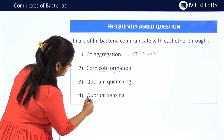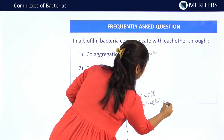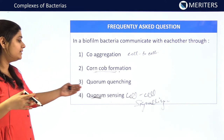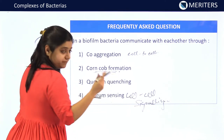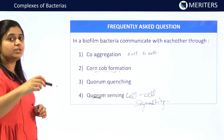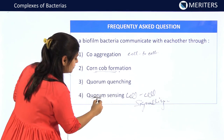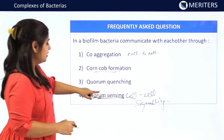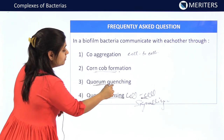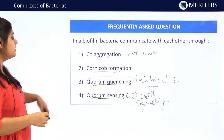Option 4 is quorum sensing, which is a cell-to-cell signaling pathway. As we have already seen, if any dangerous molecules or antibiotics attack the biofilm, one bacteria senses the danger, releases certain molecules, and these signals alert other cells — leading to processes like efflux pump activation and development of antibiotic-resistant bacteria. This process is known as quorum sensing. Option 3, quorum quenching, is the method which inhibits quorum sensing. So, the answer is quorum sensing.